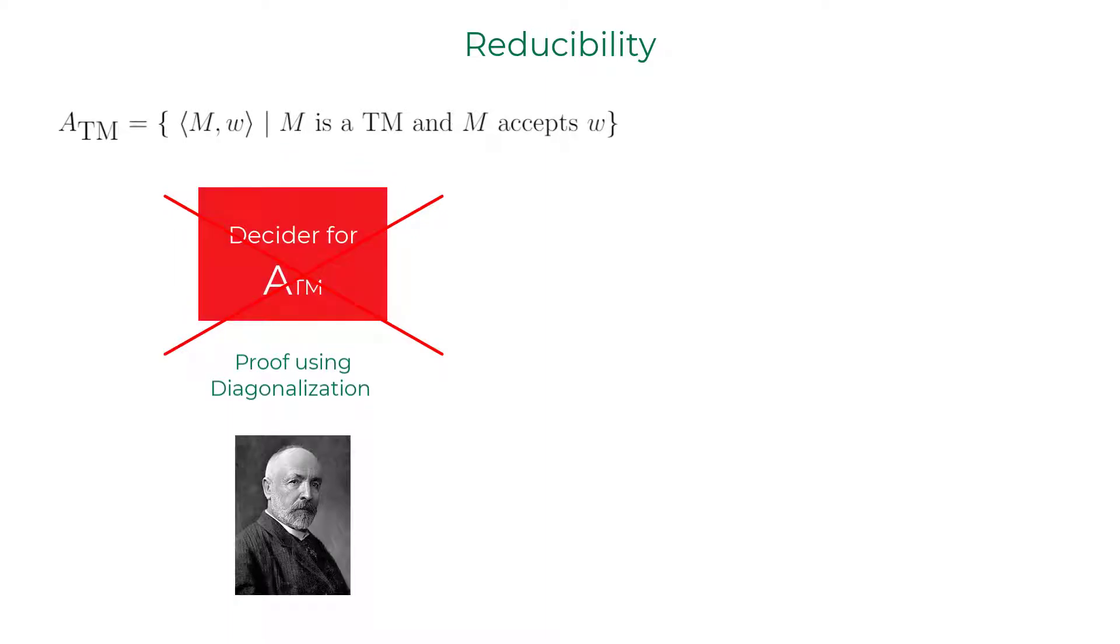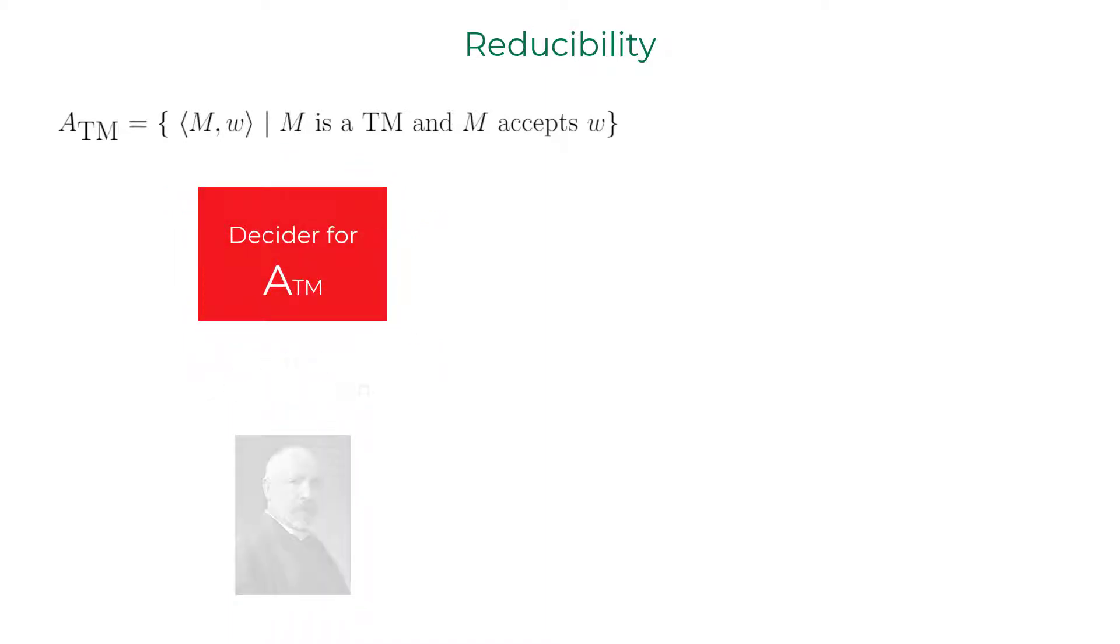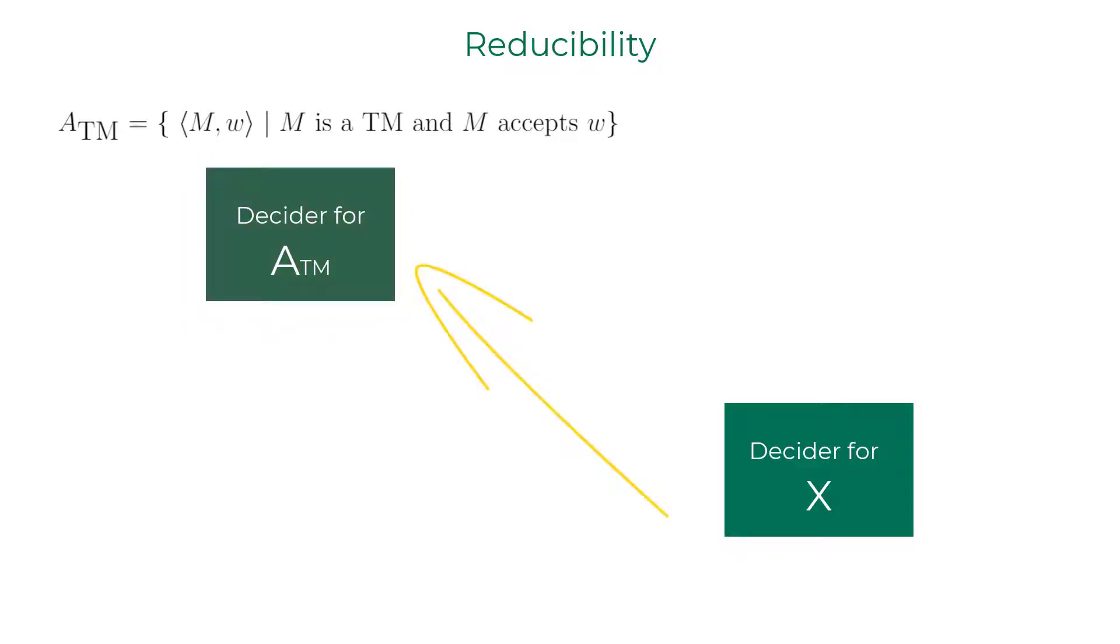Now let's say a decider for a certain language X somehow decides the language of ATM, which is already proved to be undecidable. Then we can confidently say that the decider for language X should never exist and the language X is undecidable.